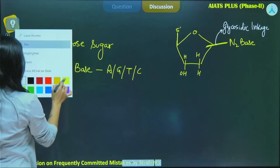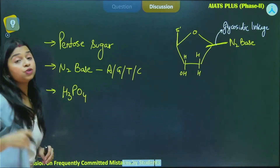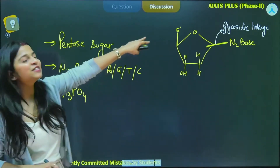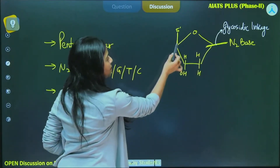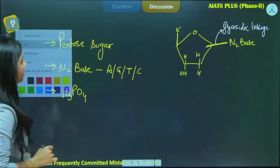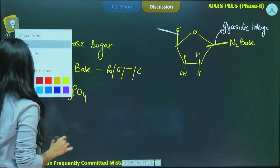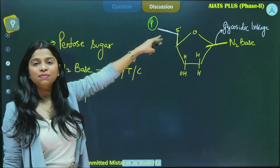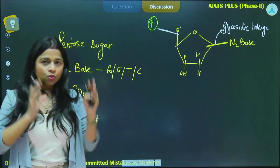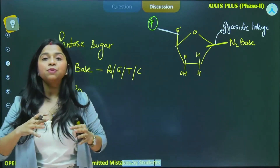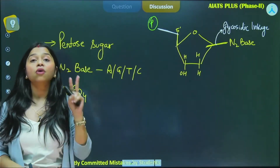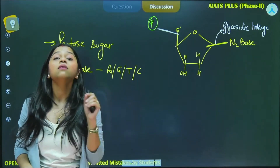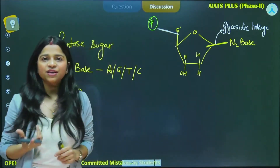The third component of our nucleotide is the phosphate group. Which position will it acquire? That will be the fifth carbon. So this is the first carbon, second carbon, third carbon, fourth carbon, and the fifth carbon is this extended arm — here we make a bond and attach the phosphate group. This bond is named the phosphoester bond. It becomes a phosphodiester bond when this nucleotide attaches to the next one, forming two phosphoester bonds.